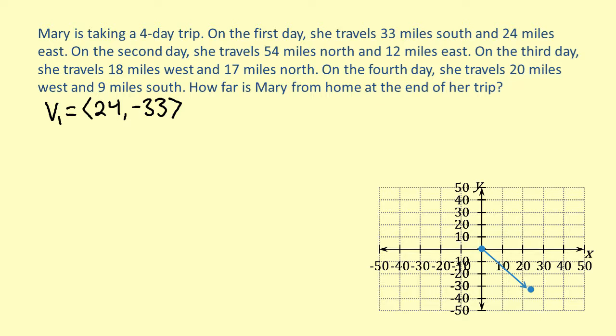To find the second vector, we need to look at how far Mary traveled the second day. She traveled 54 miles north and 12 miles east on the second day. So our second vector, which we'll call v2, is 12, 54. Notice that the end of the second vector is now in the positive y-direction. This is because Mary traveled further north on the second day than she traveled south on the first day.